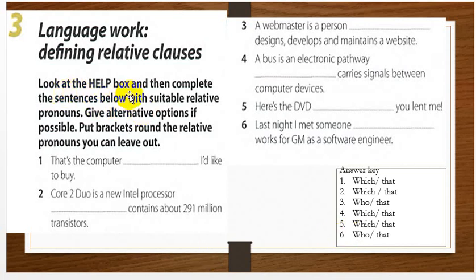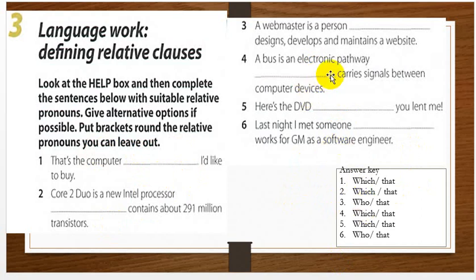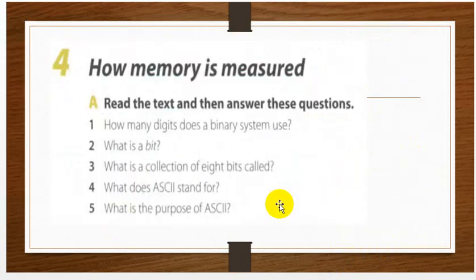Language work: defining relative clause. Look at the help box and then complete the sentences below with a suitable relative clause. Give alternative options if possible. Put brackets around the relative pronoun if you can leave it out. This is your homework — you can see the answer key and fill in the blanks with the relative pronouns.